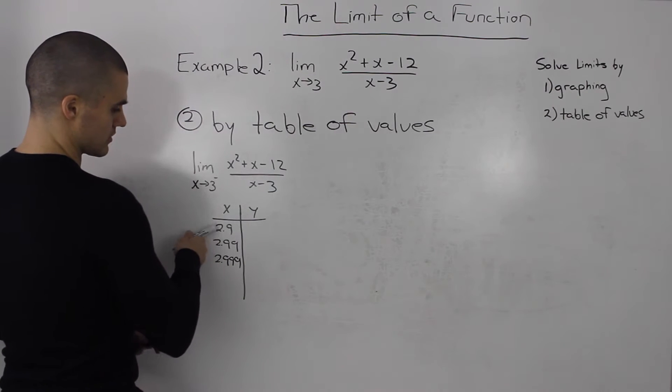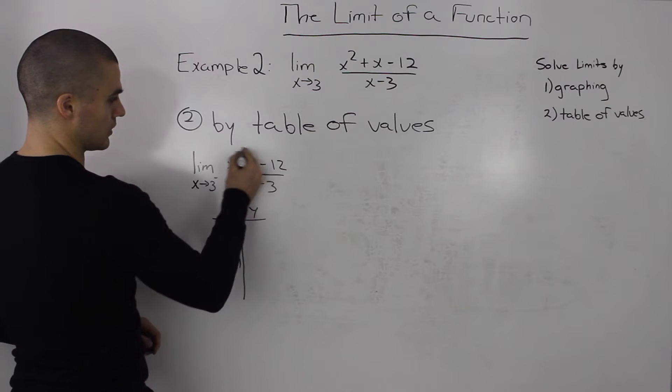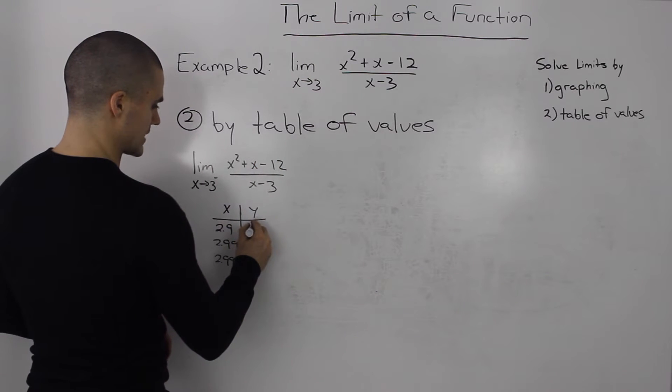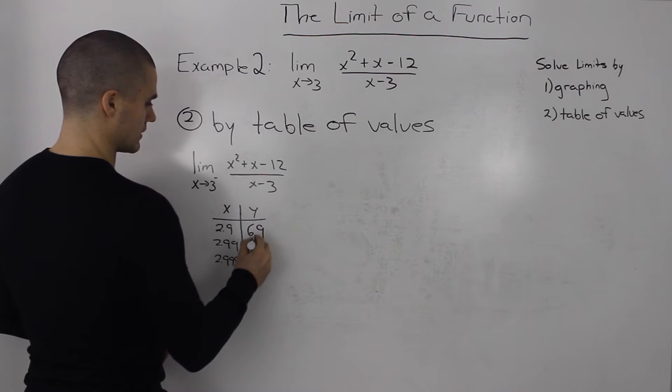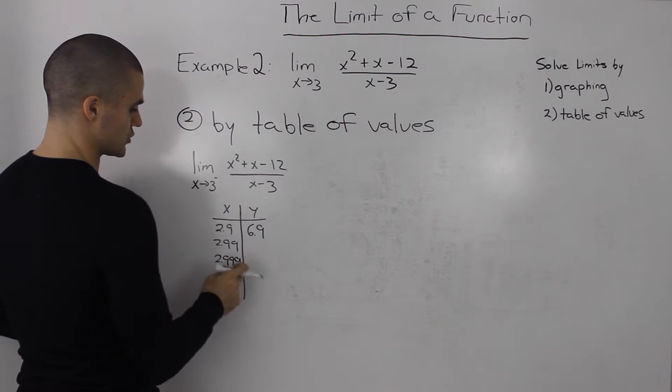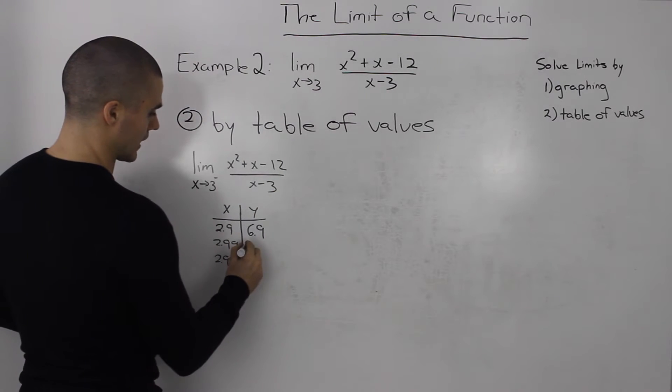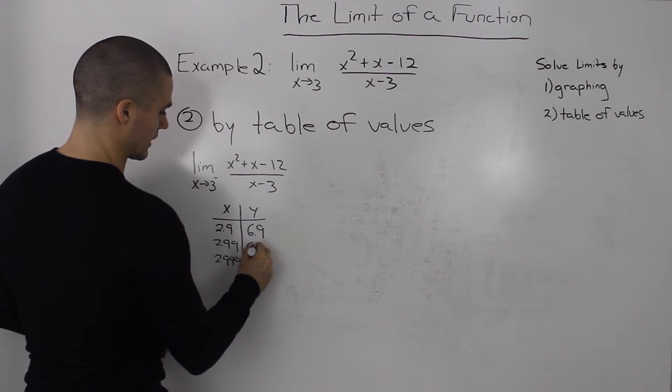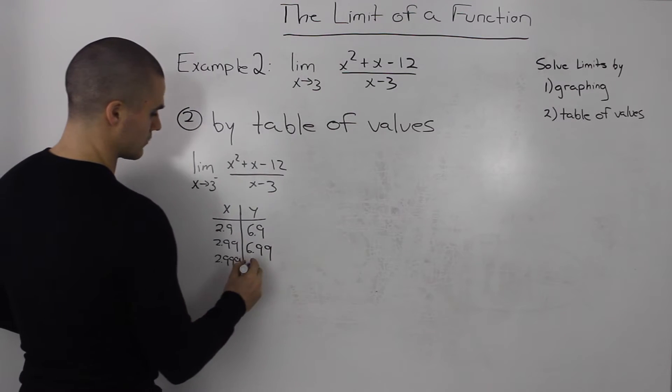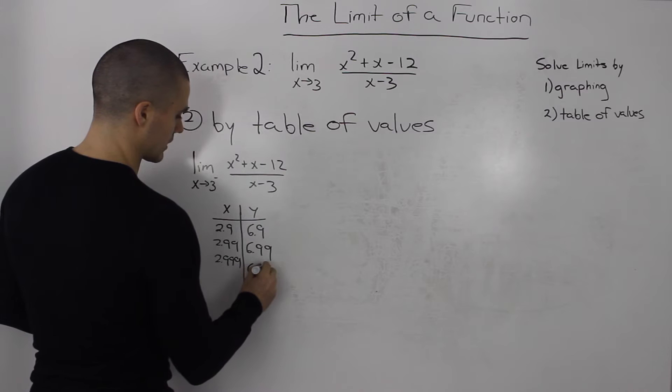If you take 2.9 and plug it into your function, you'll get 6.9 as the y value. Be careful with brackets on your calculator. If we plug in 2.99, we'll get 6.99. And if we plug in 2.999, we'll get 6.999.